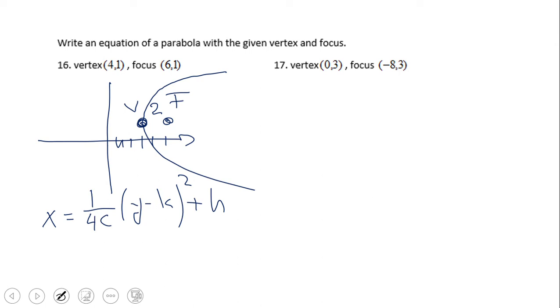k is 1, right, k is 1, h is 4, and now c is 2. So we're going to plug them in and we're going to have x equals 1 over 8—4 times 2 is 8—y minus 1 squared plus h. Okay, this is the equation of the parabola on number 16.